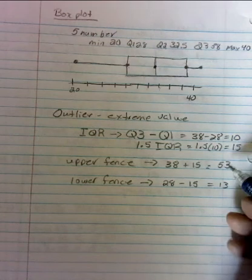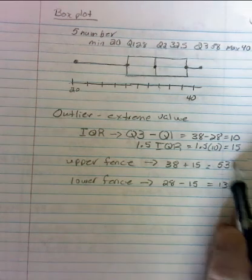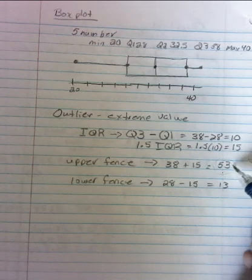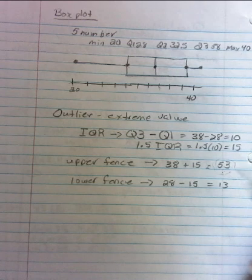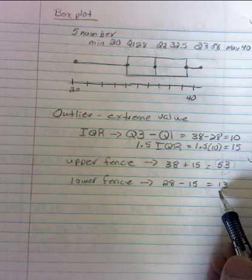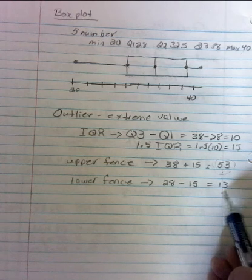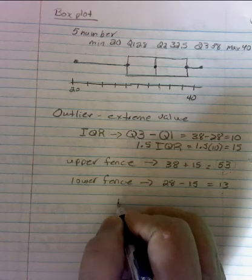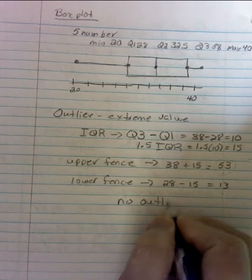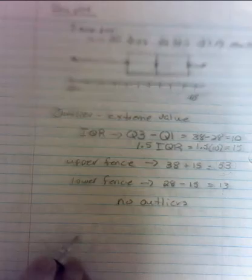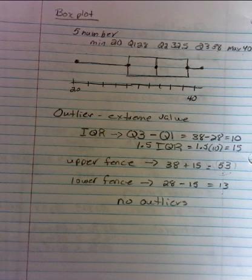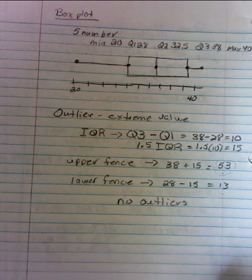And so what we ask ourselves is, do we have any data values that are above 53? No, none of our data, our max value was 40. None of our data was above 53. The same thing with the lower fence. Does any of our data go below 13? No, our minimum value was 20. So in this case, we had no outliers, because all of our values were within those fence ranges. So that was our safety zone. We had no terribly extreme values.